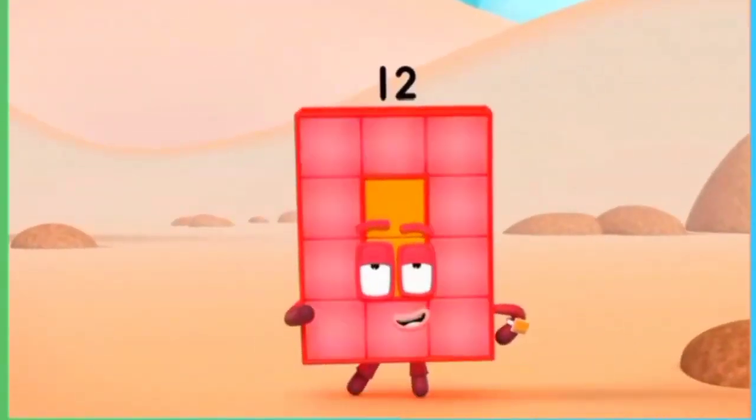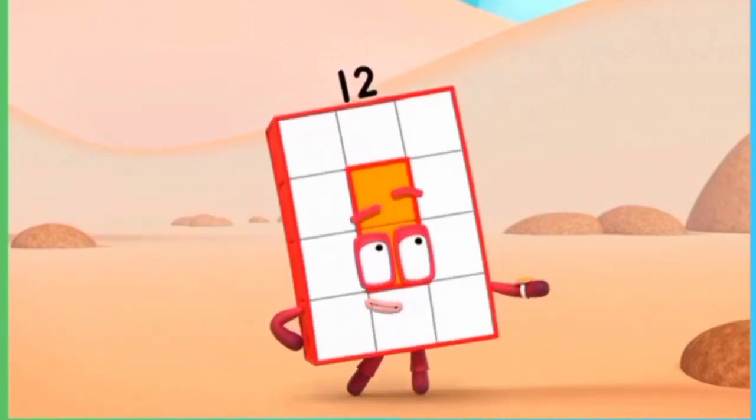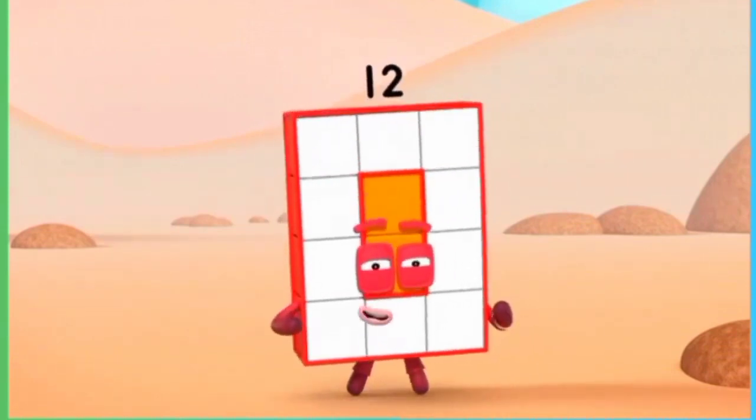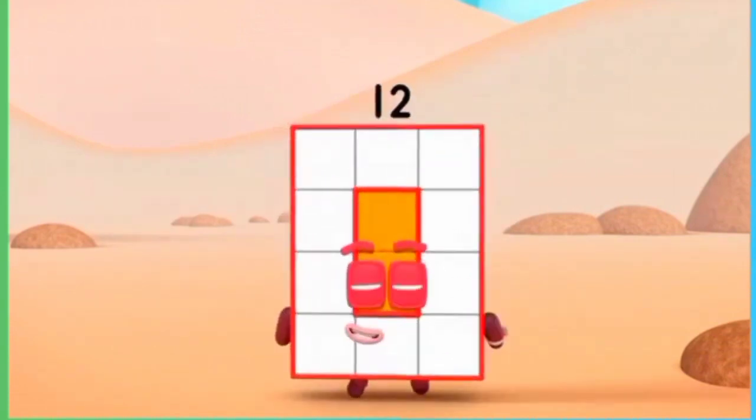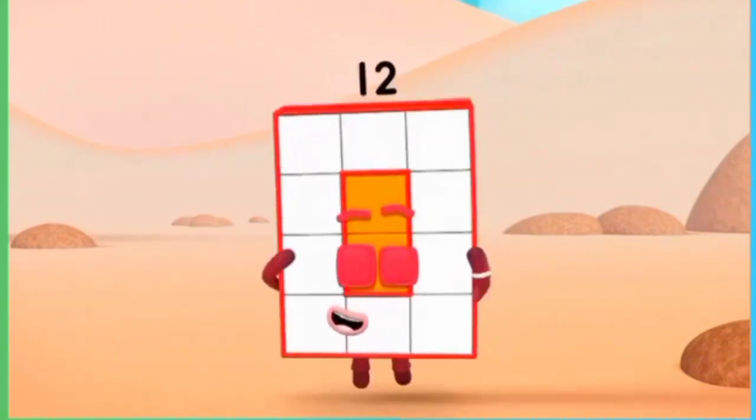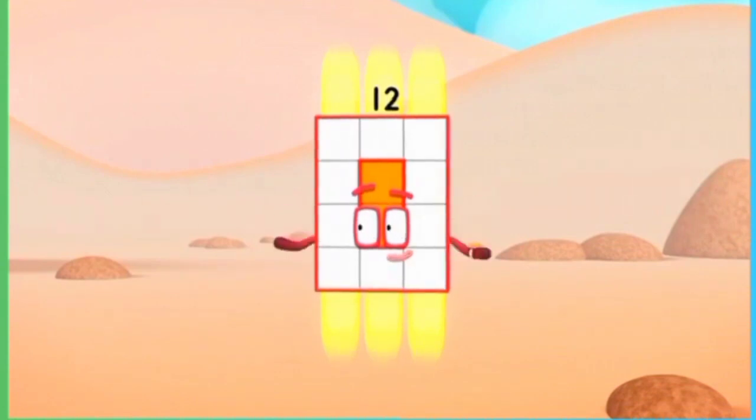I'm rectangular twelve. I'm ten and two. I make arrays, that's what I do. When I put my blocks in columns and rows, I make an array and my rectangle goes like this. Three by four.